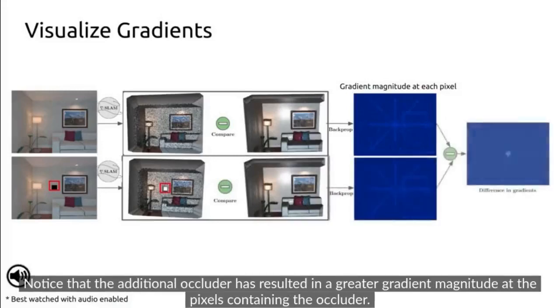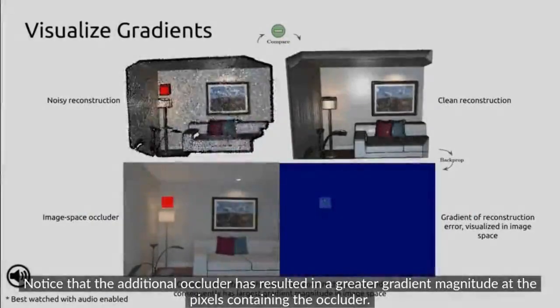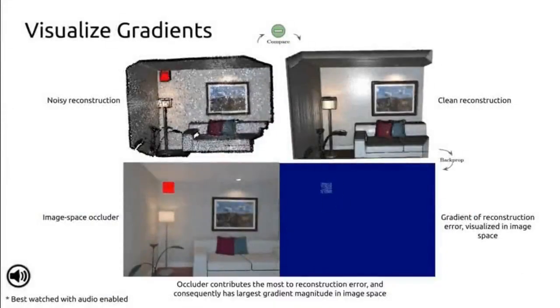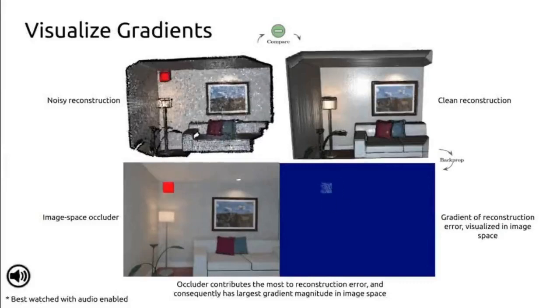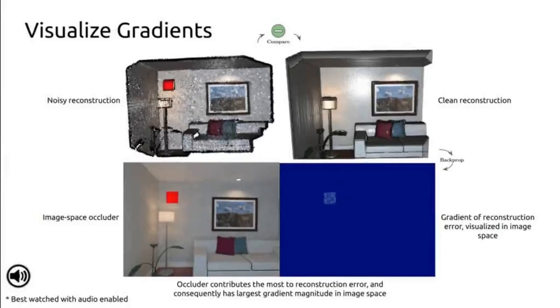Notice that this additional occluder has resulted in a greater gradient magnitude of the pixels containing the occluder. Here is a video feed in which the occluder is randomly spawned in space. Notice how Grad SLAM accurately propagates 3D gradients back to 2D pixels.